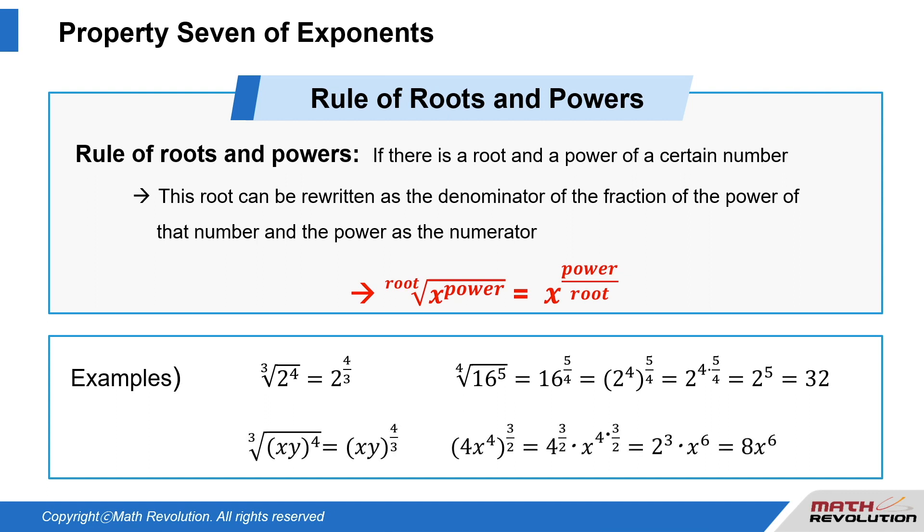Cube root of x to the power of 4 to the power of 4 over 2 is equal to x to the power of 4 to the power of 3 over 2, which is equal to 4 to the power of 3 over 2 times x to the power of 4 times 3 over 2, which is 2 cubed times x to the power of 6, which becomes 8x to the power of 6.